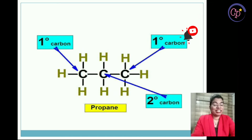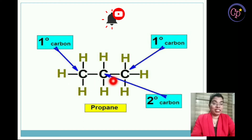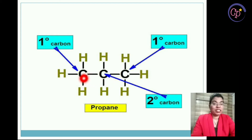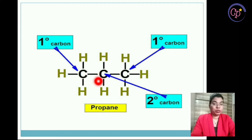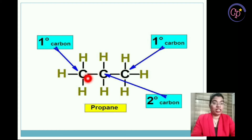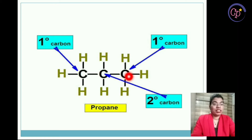Here I have taken an example of a propane molecule. In propane, there are three carbon atoms, and you need to find out the degree of each. The first carbon atom on the left is attached to one nearby carbon atom, so it is showing one degree. The second carbon is attached to two other carbon atoms — one to the left and one to the right — so it is showing two degree carbon. The third carbon is attached to one carbon atom to the left, so it is showing one degree.